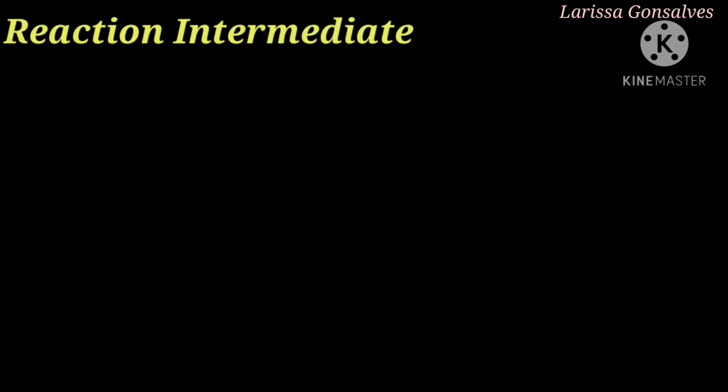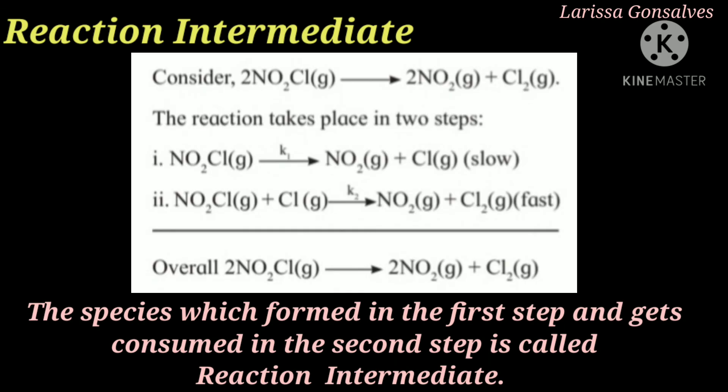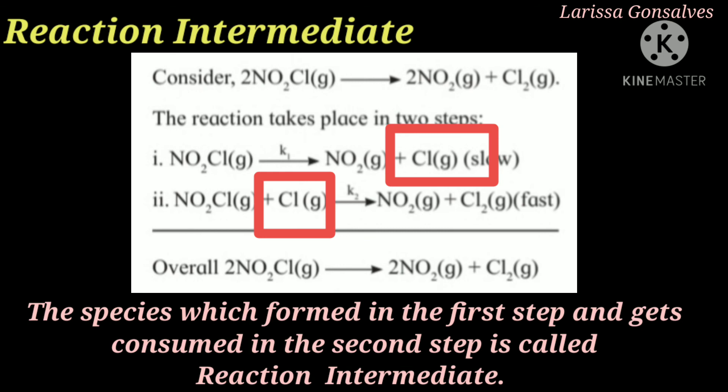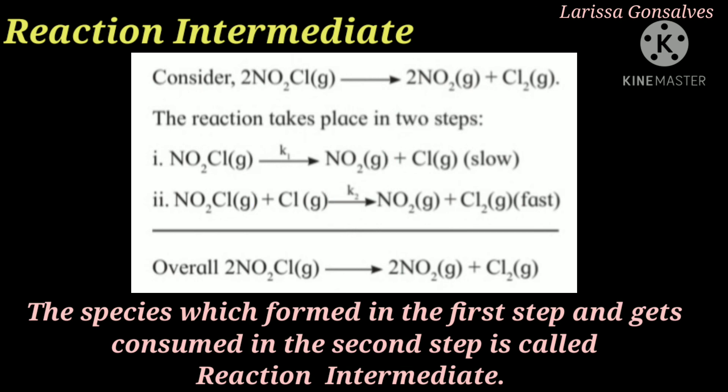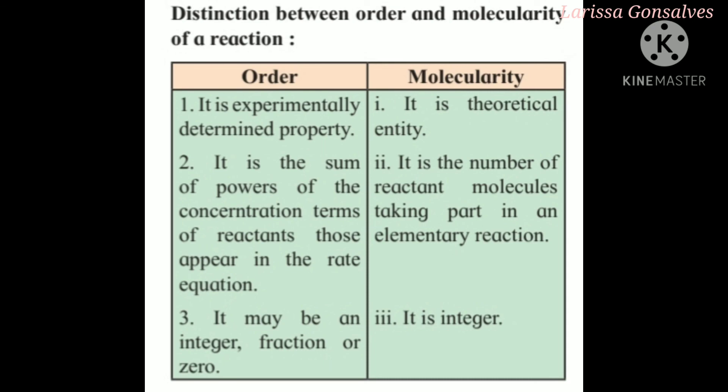What is a reaction intermediate? In the above reaction, Cl is formed in the first step but consumed in the second step. Such species represent the reaction intermediate. The reaction intermediate does not appear in the rate law. Distinguishing order from molecularity: order is an experimentally determined property, whereas molecularity is a theoretical entity. Order is the sum of powers of concentration terms in the rate equation; molecularity is the number of reactant molecules in an elementary reaction. Order may be an integer, fraction, or zero, whereas molecularity is always an integer.